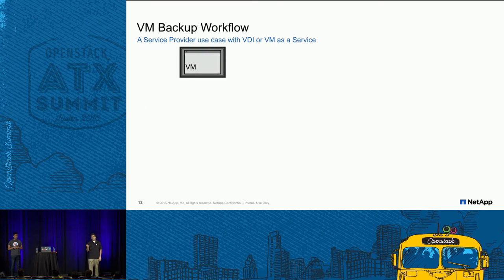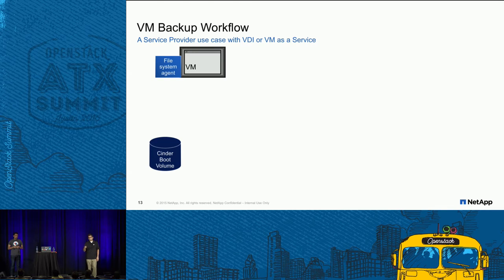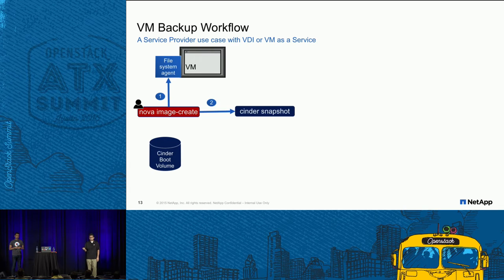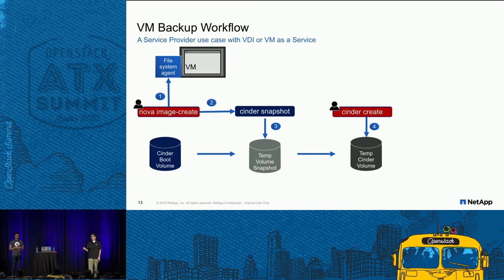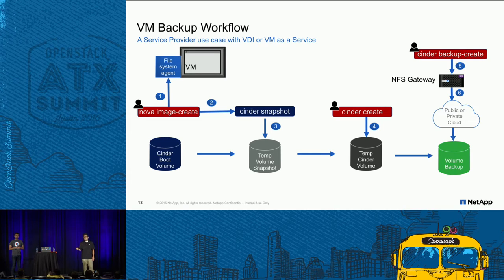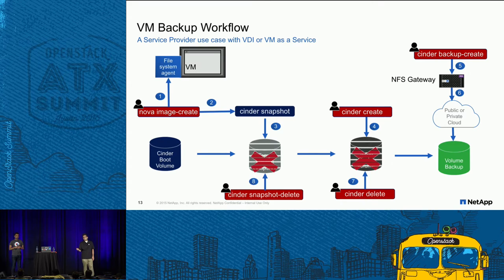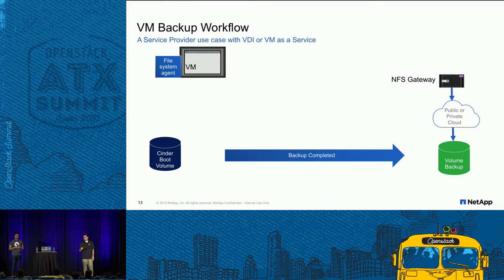The VM backup workflow for a file-system-consistent backup involves a file system agent on the VM. With the VM on an enterprise backend, you run 'nova image create', which triggers the file system agent and creates a Cinder snapshot. Once you have that temporary Cinder snapshot, you create a Cinder volume from it, then create a backup from that volume using 'cinder backup create'. You then delete the temporary Cinder volume and temporary snapshot, leaving you with a consistent backup.